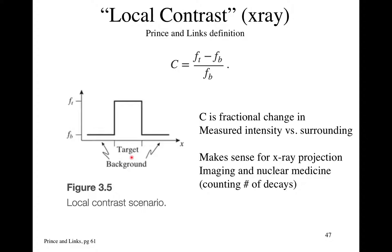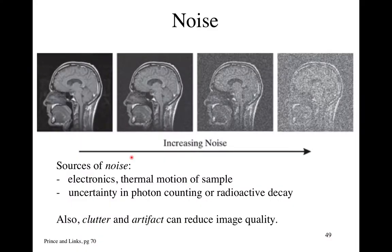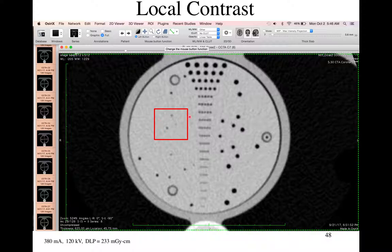However, people don't really perceive this way. This is a good definition for raw X-ray or CT data, but what humans perceive when looking at an image is essentially the raw contrast-to-noise between object, background, and the amount of noise in the field of view. Most of the assignments will use raw contrast-to-noise as opposed to this fractional local contrast as defined in the book.